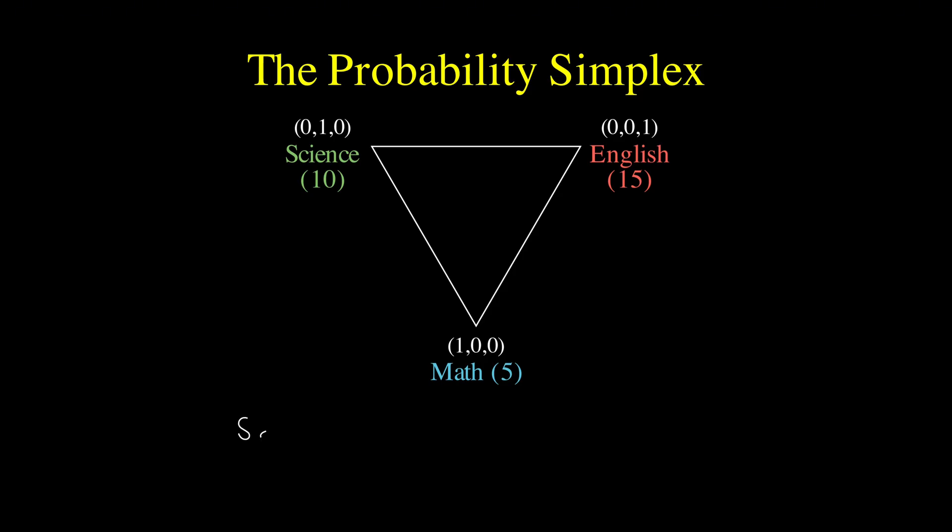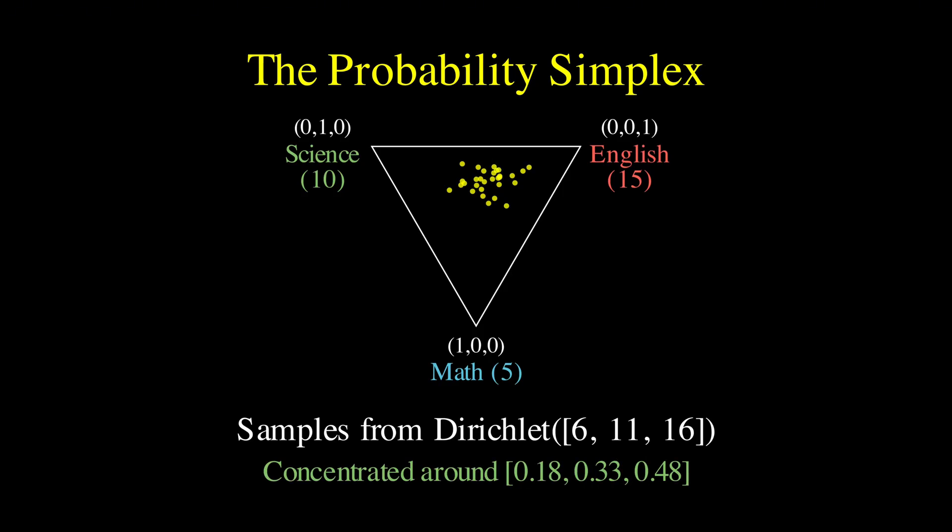With our university example using parameters 6, 11, and 16, you'd see samples concentrated around the point that corresponds to about 18% math, 33% science, and 48% English.